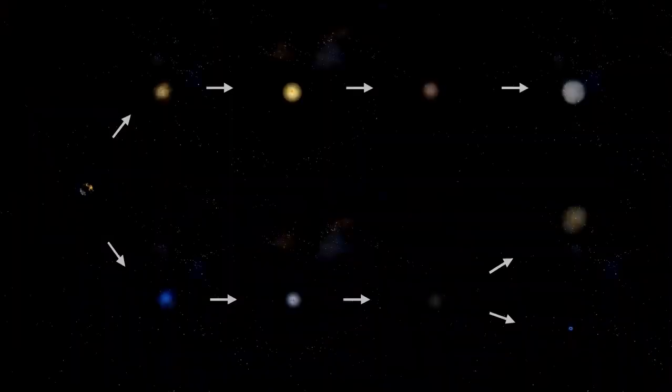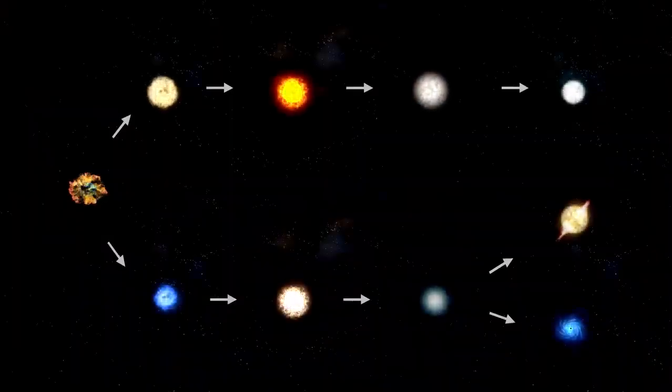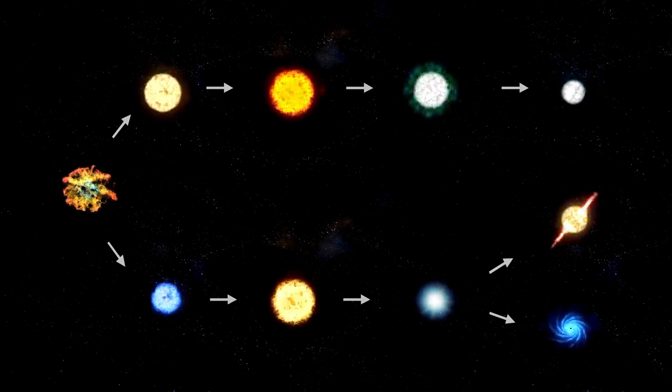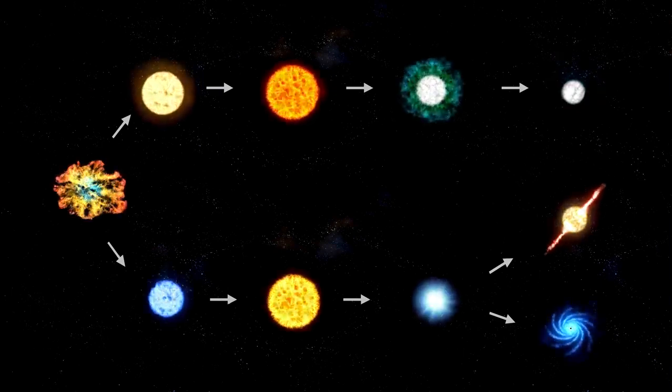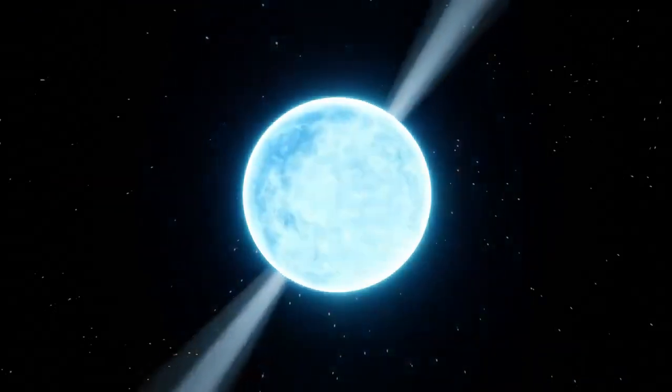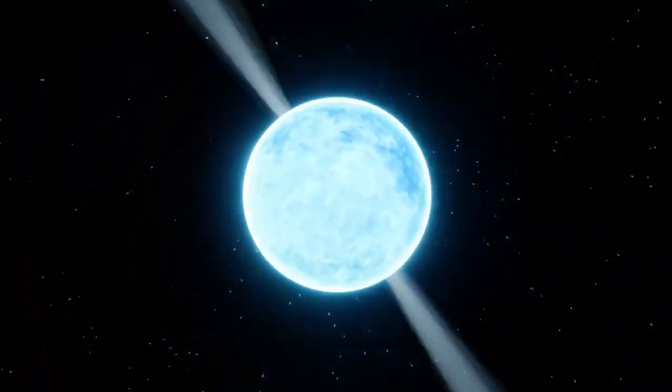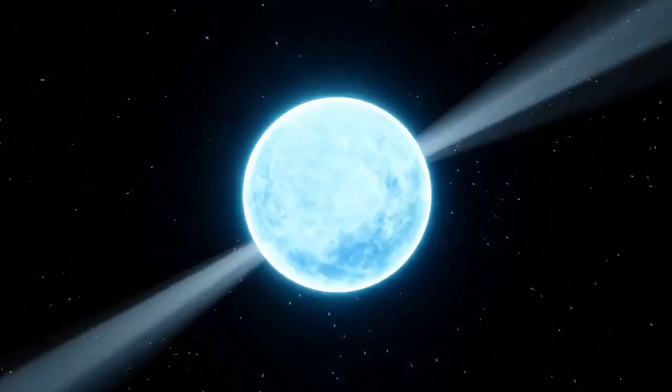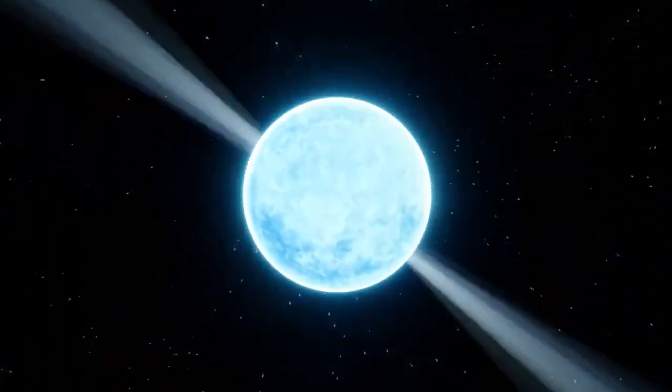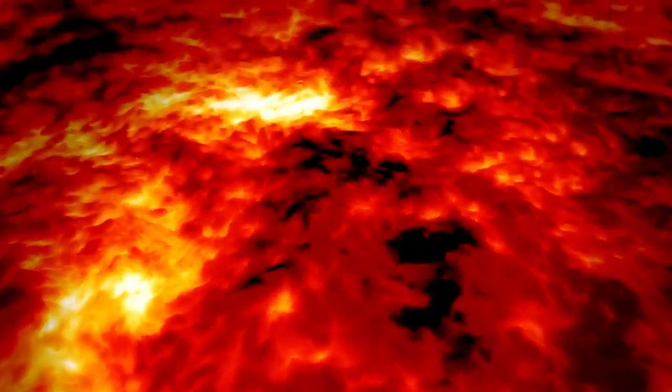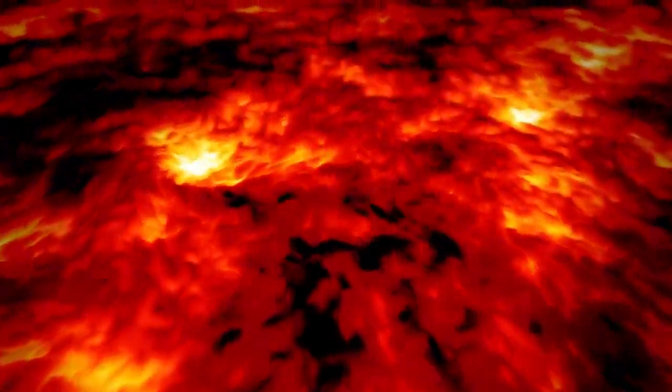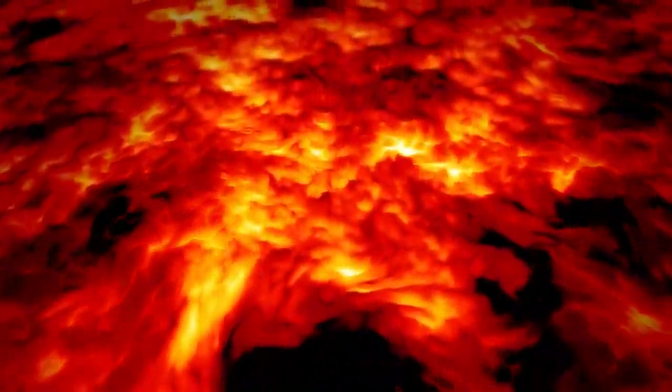One intriguing process within the star is stellar convection, where energy generated in the core rises toward the surface. This movement creates convection currents that transport energy outward, balancing the star's internal processes with its external luminosity. These currents also cause variations in brightness, manifesting as the pulsations observed from Earth.